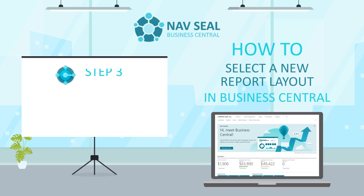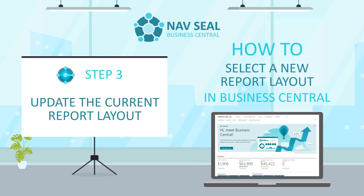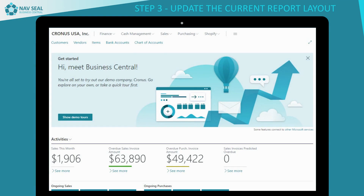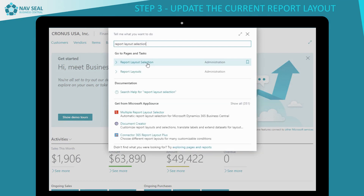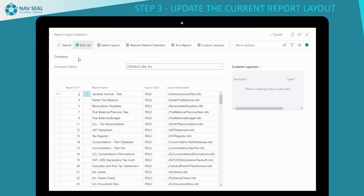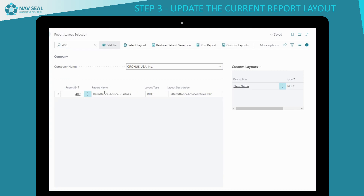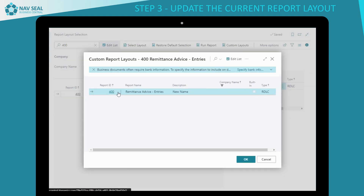Step 3: Update the current report layout. Go to the Report Layout Selection page in Business Central. Then search for the report ID you want to update. Click on the Layout Type column. Select Custom Layout from the drop-down menu and select the new custom layout created in Step 1. Select the new layout file.